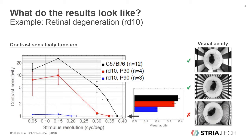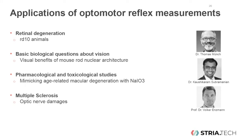For most research projects it will not be necessary to determine the full contrast sensitivity function — it is often sufficient to measure only visual acuity or only contrast sensitivity at a certain resolution. In this webinar, we will look at several application areas. Most people associate optomotor measurements with studying retinal degeneration, and it is indeed a great tool for that. Kaushikaram Subramanian will show us that optomotor reflex measurements can also answer very basic biological questions, in this case about the benefits of the very specific nuclear architecture in rods.